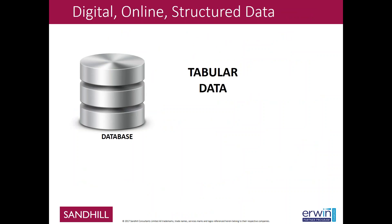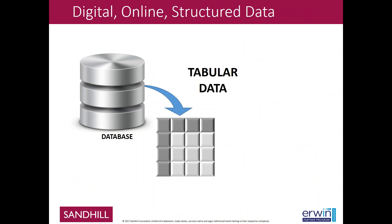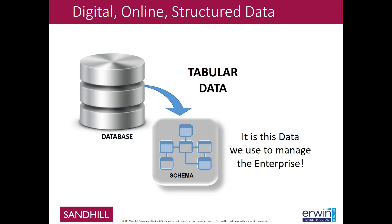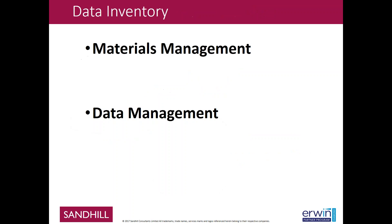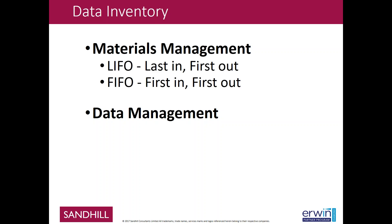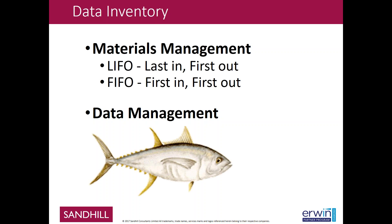Combining those figures — 15% critical data and 20% tabular — we're only leveraging about 3% of the entire mass of data in an organization to provide value. Today we've focused on digital online structured data: tabular data, like a spreadsheet with rows, columns, and cells — data we use to manage the enterprise, put in the form of a schema. We also have the inventory management problem around data. Anyone familiar with materials management knows LIFO and FIFO, but in data management we have a bigger problem: we have FISH — first in, still here.